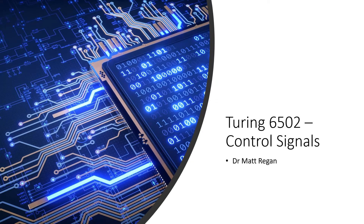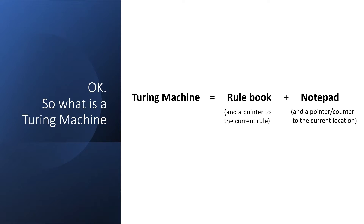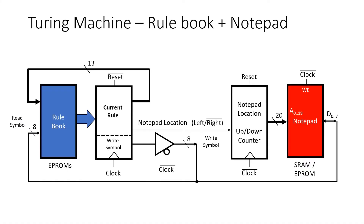Welcome to part three of this Turing 6502 build. I'm Dr. Matt Regan. So I've made the case in the last two videos that a Turing machine, and therefore a general computer, can really be thought of as being a rulebook and a notepad, plus a way of keeping track of where we are on the notepad and what rule we're using. Here's our template for the 256-symbol machine — from now on I'll just call this the 8-bit machine.